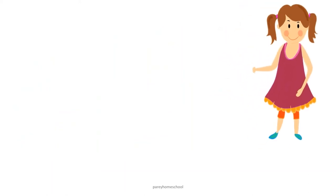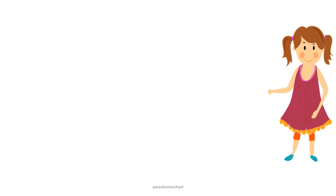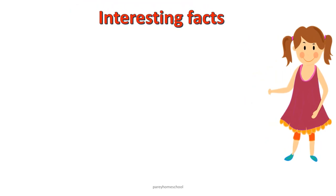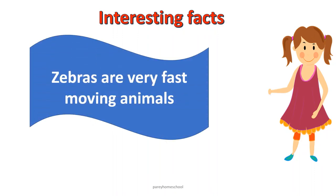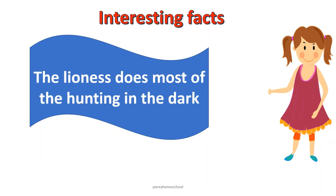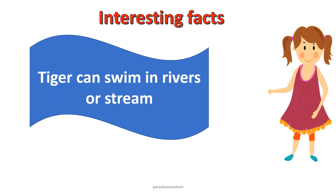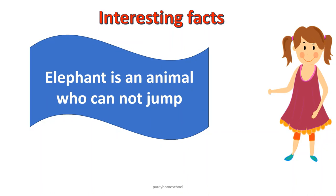These were wild animals. Now I will tell you some interesting facts about animals. Do you know zebras are very fast moving animals? The lioness does most of the hunting. Tiger can swim in rivers or streams. Elephant is an animal who cannot jump. So friends, these were a few facts about wild animals.